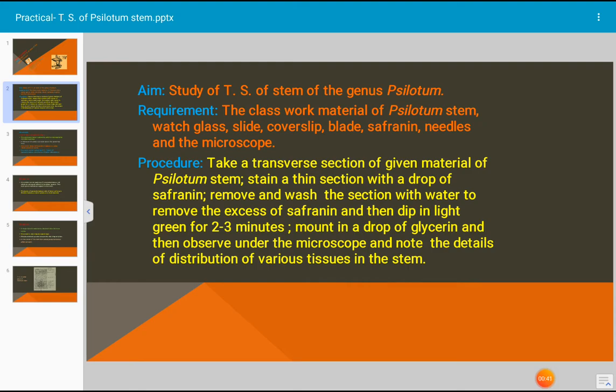In procedure, what we have to do is take a transverse section of given material of Psilotum stain. Take many sections and select a very thin section. Stain the selected section with saffranine, remove and wash the section with water to remove the excess of saffranine, and then dip in light green for 2 to 3 minutes.